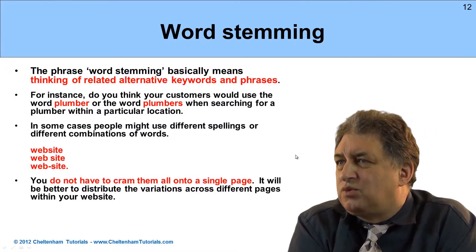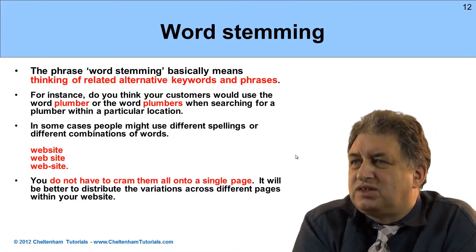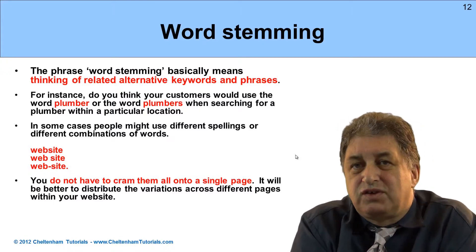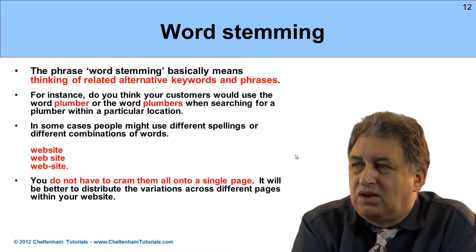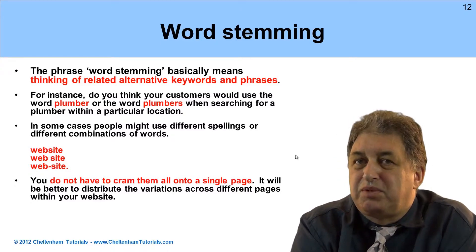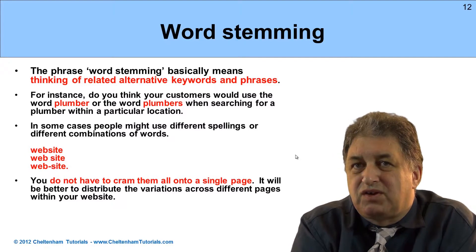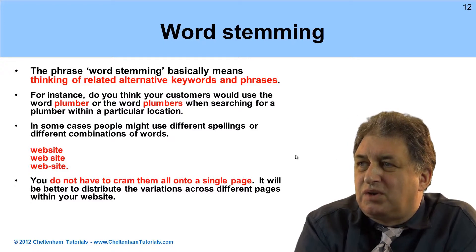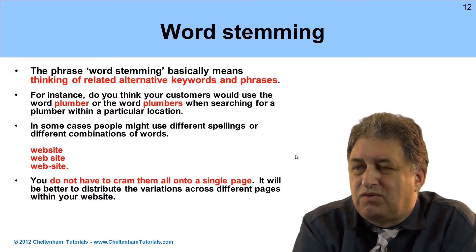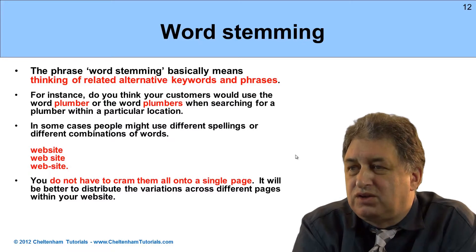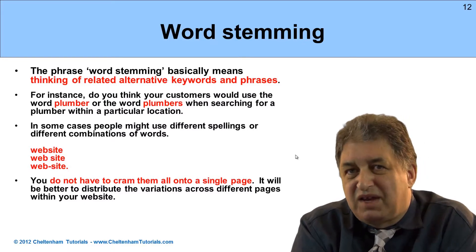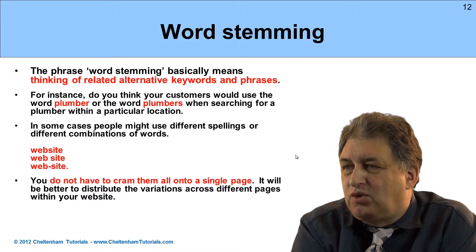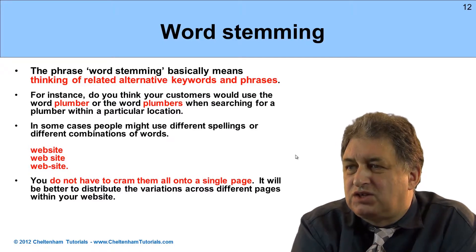Another phrase you need to know about is word stemming. Word stemming basically means thinking of related but alternative words. For instance, an obvious one would be the word plumber, plumbers, or plumbing - all spelled differently but related words. Another example is the word website: it could be all one word, two words with a space, or hyphenated as web-site.